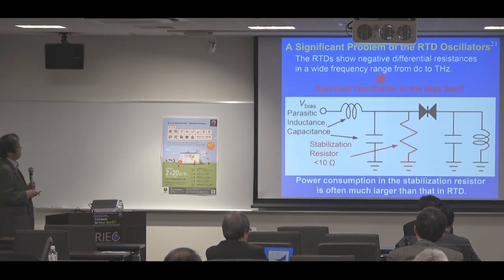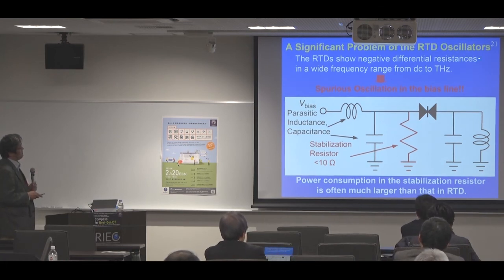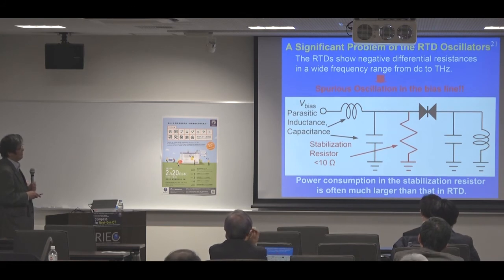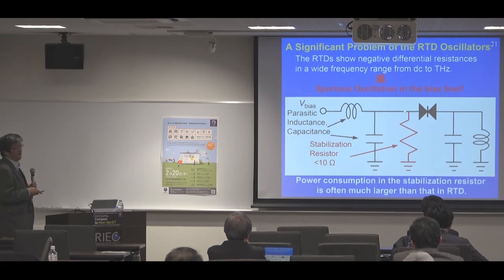The first problem is spurious oscillation in the bias line. The RTDs show negative differential resistance over a wide frequency range from DC to terahertz. The NDR is also observed in the bias line, so spurious oscillation is a very significant problem in RTD oscillators, due to the two-terminal nature of the RTD device.